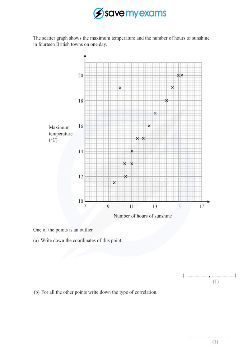What are they asking us? One of the points is an outlier. I think we've identified that already. Write down the coordinates of this point. It's this point here. If we look at that on the horizontal axis, that is 10. And on the vertical axis, that is 19. So it's 10, 19, because the horizontal axis always comes first. If it were the x-axis, that would be obvious.